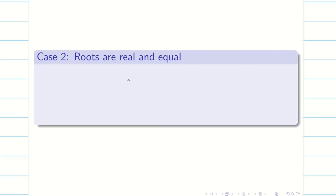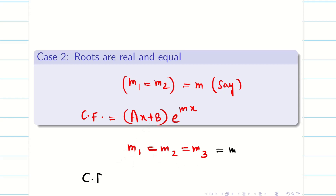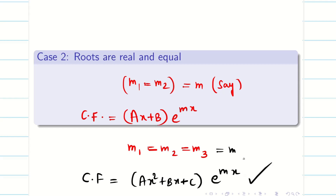If the roots are real and equal — say both equal to m — then the complementary function is: CF = (Ax + B)·eᵐˣ. If we have three equal roots m₁ = m₂ = m₃ = m, then the complementary function becomes: CF = (Ax² + Bx + C)·eᵐˣ. This is the case for two equal roots and three equal roots respectively.